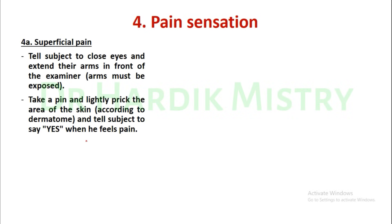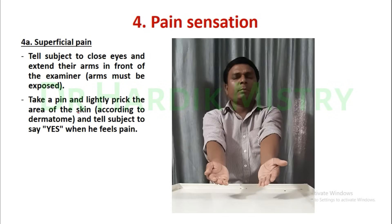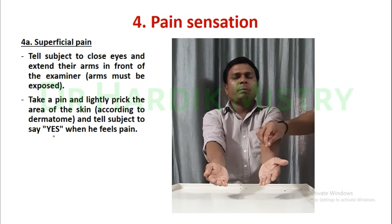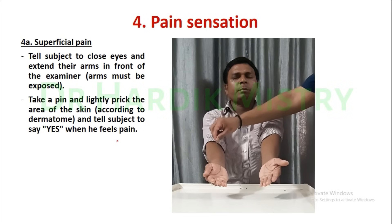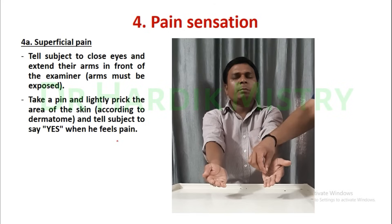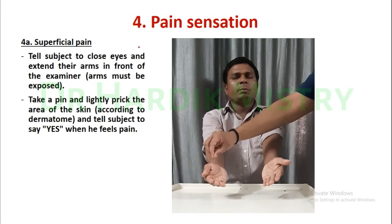Now the fourth part is pain sensation. First, superficial pain. Tell the subject to close his eyes and extend their arms. Arms must be exposed. Take a pin and lightly prick the areas of skin according to the dermatomes. Tell the subject to say yes when he feels the pain. This is how you check superficial pain in the pain sensation.